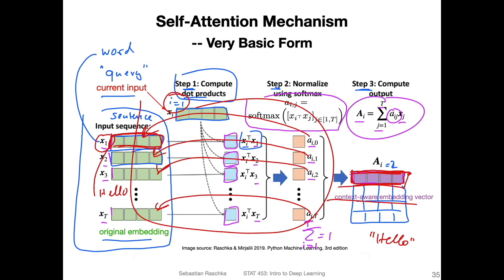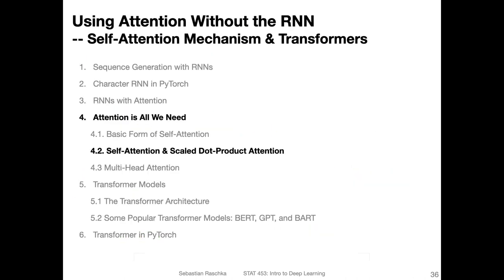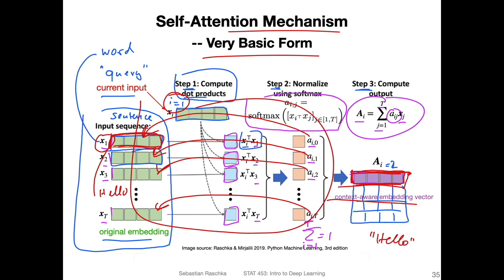We now have a more powerful, context-aware embedding vector. What we did is, instead of just considering each word individually, we now have representations of words that are aware of their context. This is what I call a very simple, basic form of self-attention. This is not what is used in the transformer, but it's just to introduce the topic.